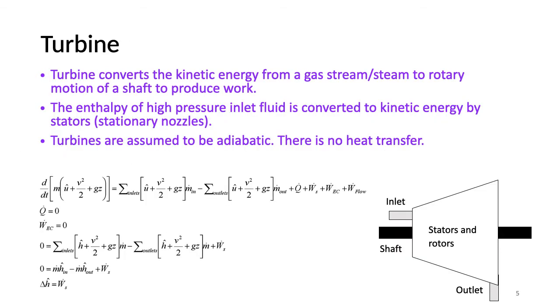Turbines. Turbine is an equipment that converts the kinetic energy from a gas stream or steam flow into rotary motion of a shaft to produce work. The enthalpy of high pressure inlet fluid is converted to kinetic energy by stators. Stators are placed inside the turbine and are stationary. They are a type of nozzles that increase the kinetic energy of the incoming fluid stream. The high velocity gas stream then drives the rotor.